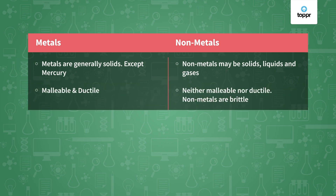Metals are malleable and ductile. That means they can be beaten down into thin sheets — that is called malleability — and they can also be drawn into wires, so they are called ductile. But non-metals are neither malleable nor ductile because they are very brittle. When you hammer them, they break easily.